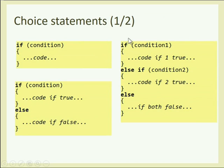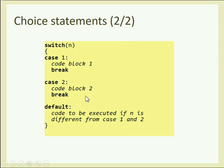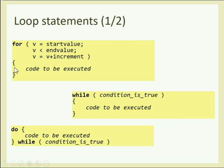Control statements — I won't spend more than ten seconds, because they are identical to C. If with braces, nothing changes. The switch statement is the same. The for, while, and do-while are the same. Break and continue are exactly identical. Nothing new here.